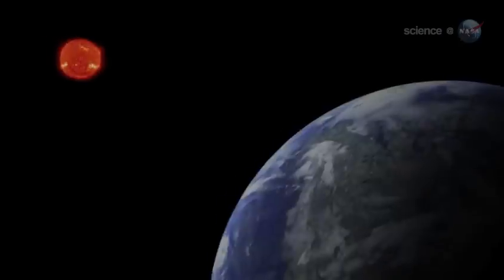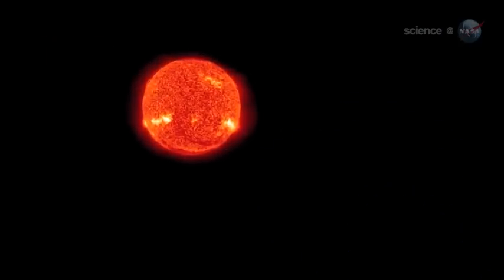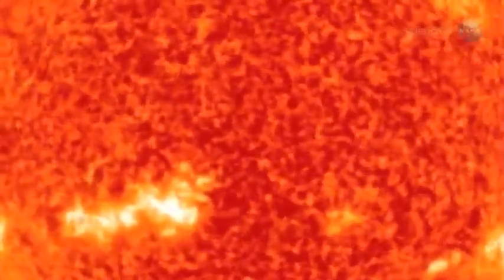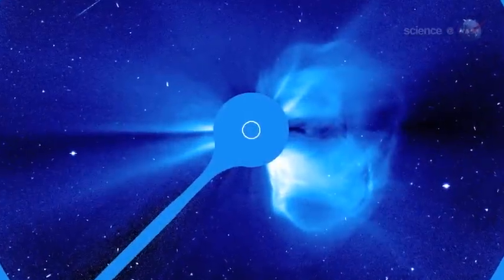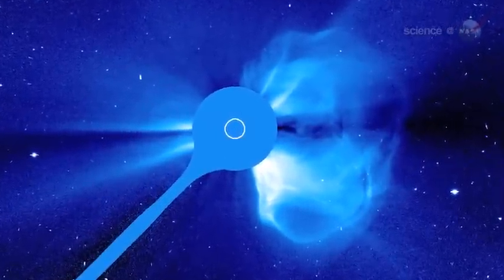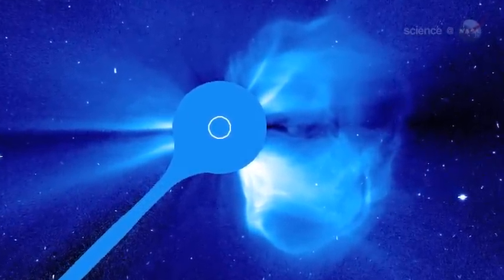Moreover, the battered planet orbits its star 97% closer than Earth orbits the Sun. When it gets hit by clouds of plasma, or coronal mass ejections, at such close range, the results could be as beautiful as they are terrifying.